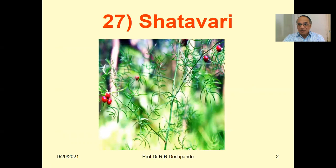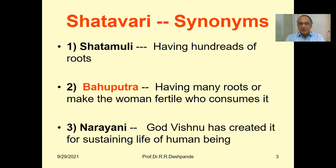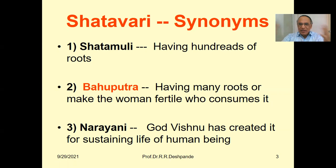The synonyms of Shatavari give us the idea about the structure, properties, and actions of the plant. First: Shatmooli — 'Shat' means hundred in Sanskrit, and 'Moola' means roots, so this plant has hundreds of roots. Second: Bahuputra — 'Bahu' means many, 'putra' means progeny. Shatavari is the best plant to make a woman fertile; if a woman is suffering from idiopathic infertility, you must try Shatavari.